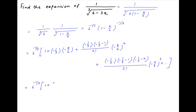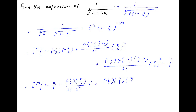This can be written as 6 raised to the power minus 1 upon 3, times in brackets: 1 plus x upon 6, plus (minus 1 upon 3)(minus 4 upon 3) divided by 2 factorial times 2 squared, multiplied by x squared, plus (minus 1 upon 3)(minus 4 upon 3)(minus 7 upon 3) divided by 3 factorial times 2 cubed, multiplied by x cubed, plus and so on.